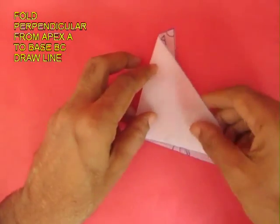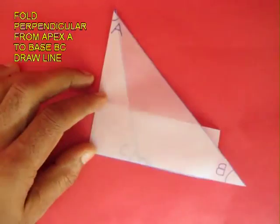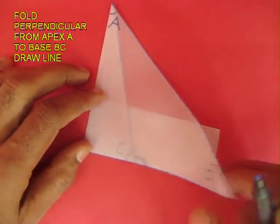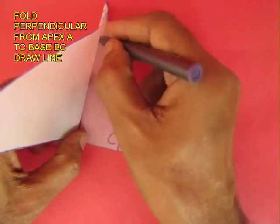Now drop a perpendicular from the apex A to the base BC. Fold the perpendicular, open this and mark it with a pen. This is the perpendicular line.